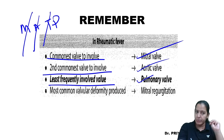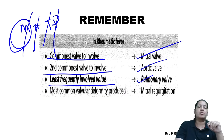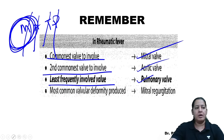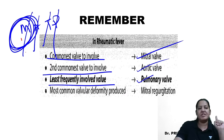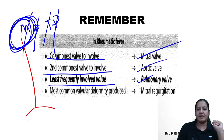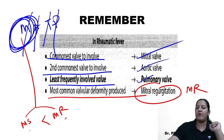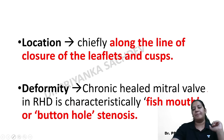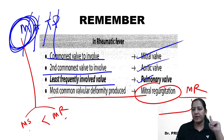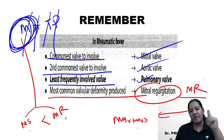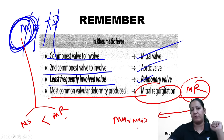Both mitral regurgitation and mitral stenosis can occur. In acute rheumatic carditis MR is more common; in chronic rheumatic carditis MS is more common. But overall, MR is the most common valvular deformity. Because of mitral regurgitation, murmurs can be heard on auscultation with a stethoscope. The most common valvular deformity overall is MR; the mnemonic for valve sequence is MATP.